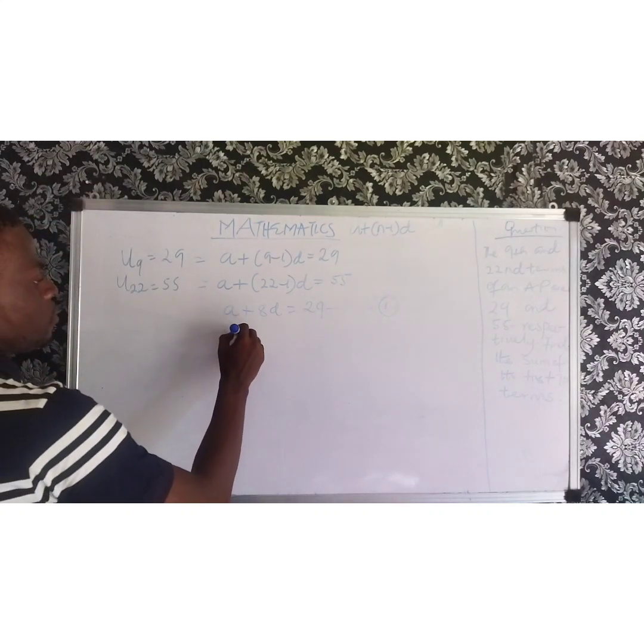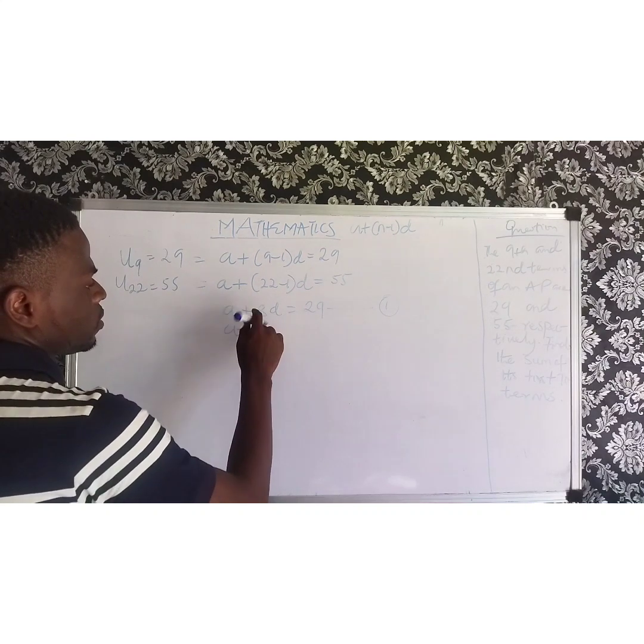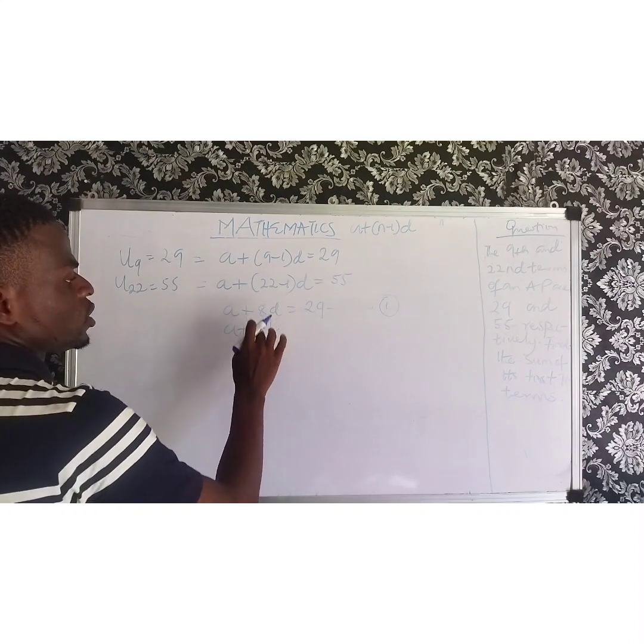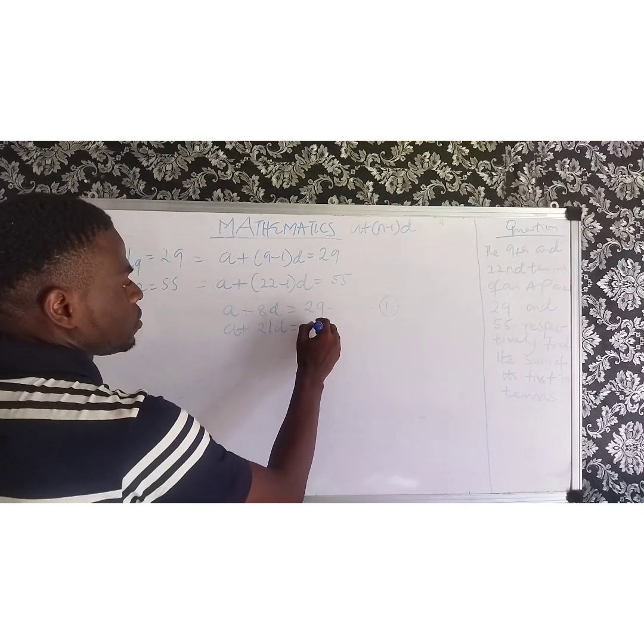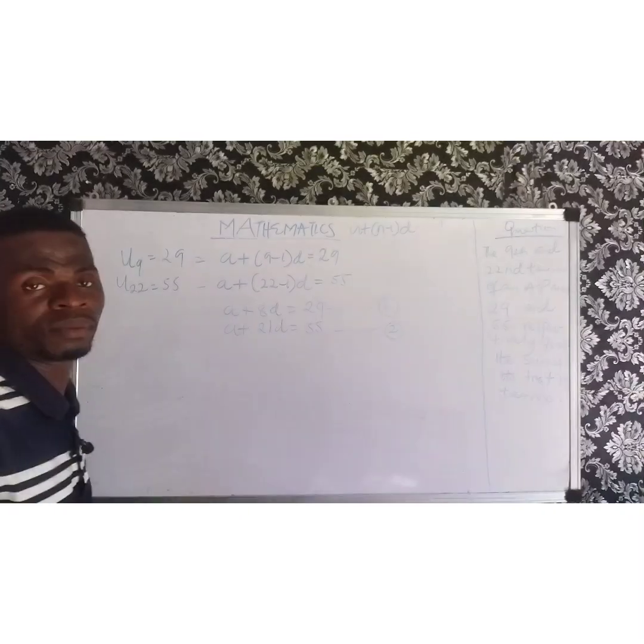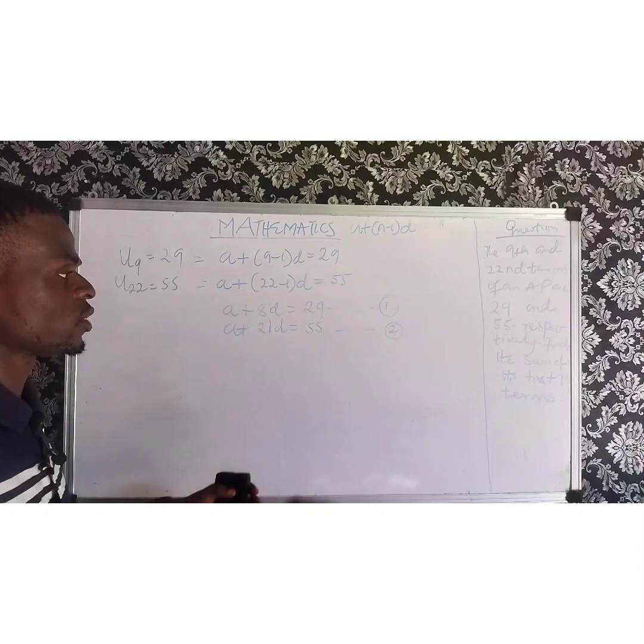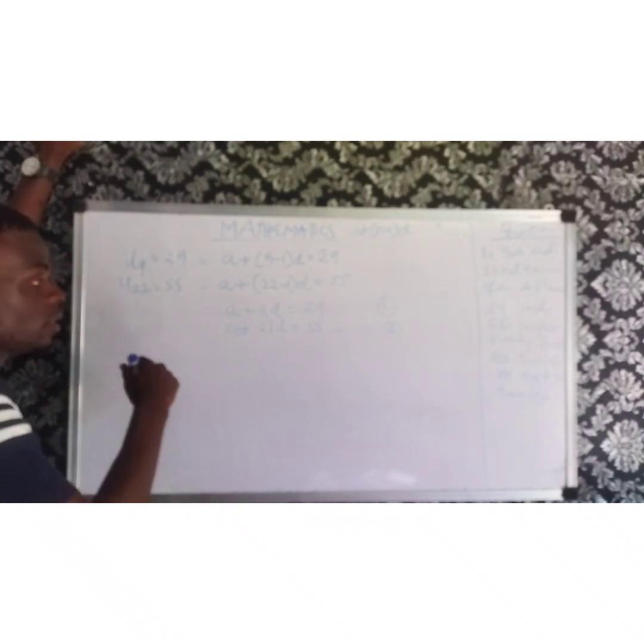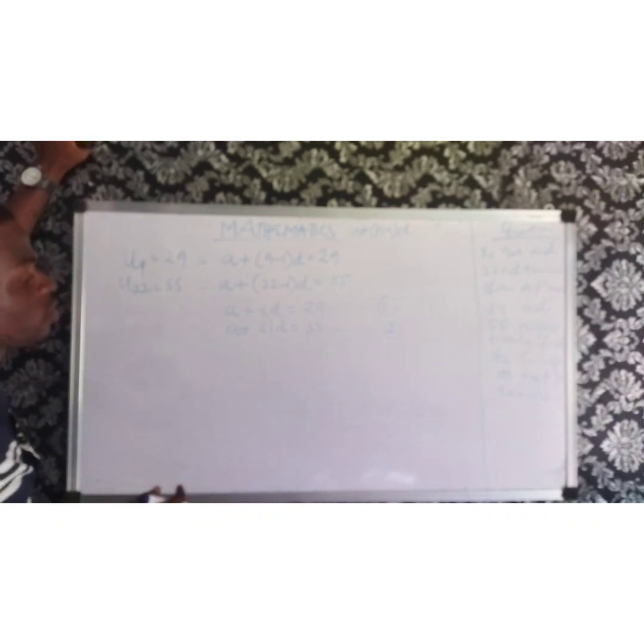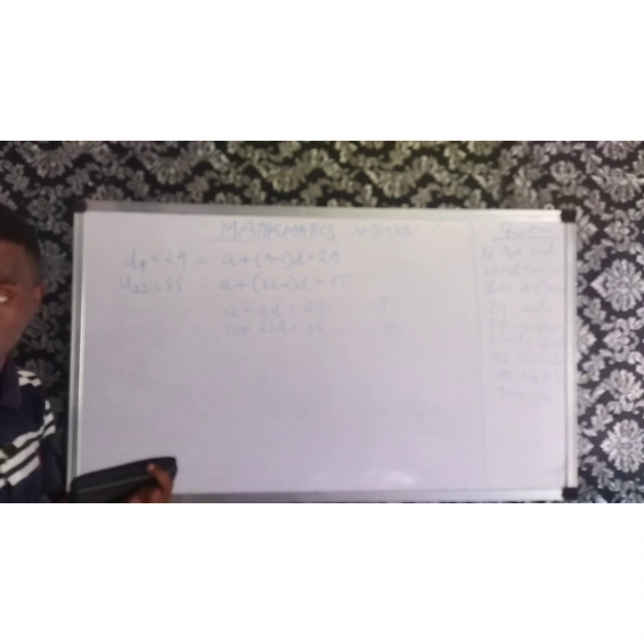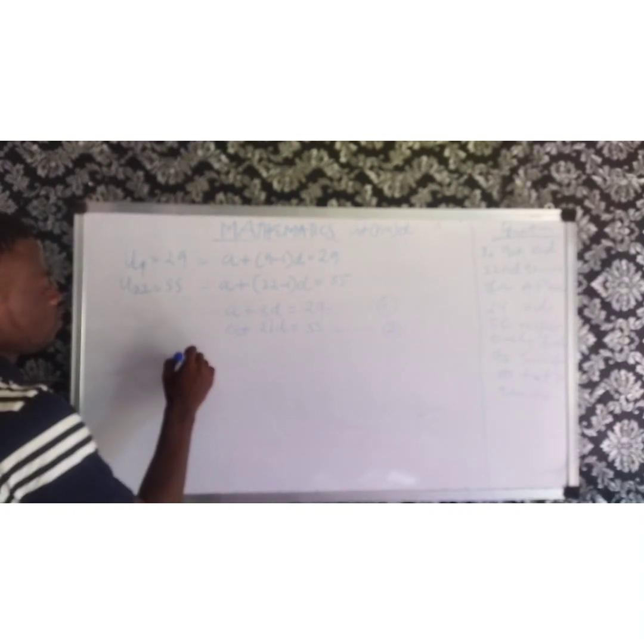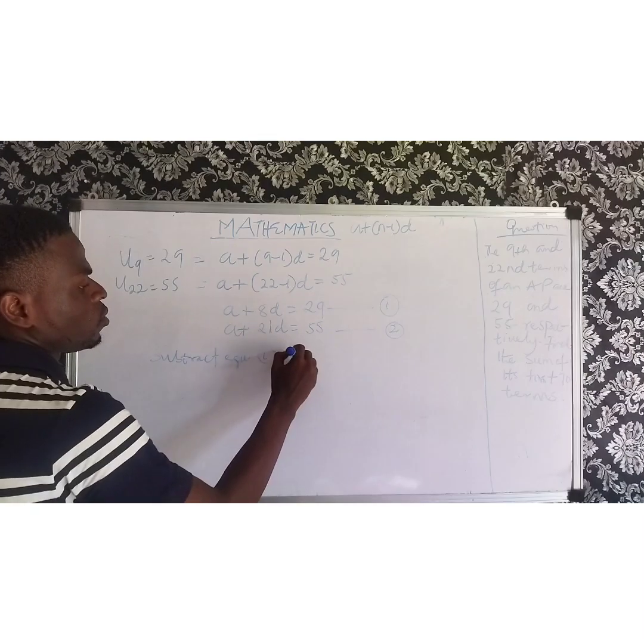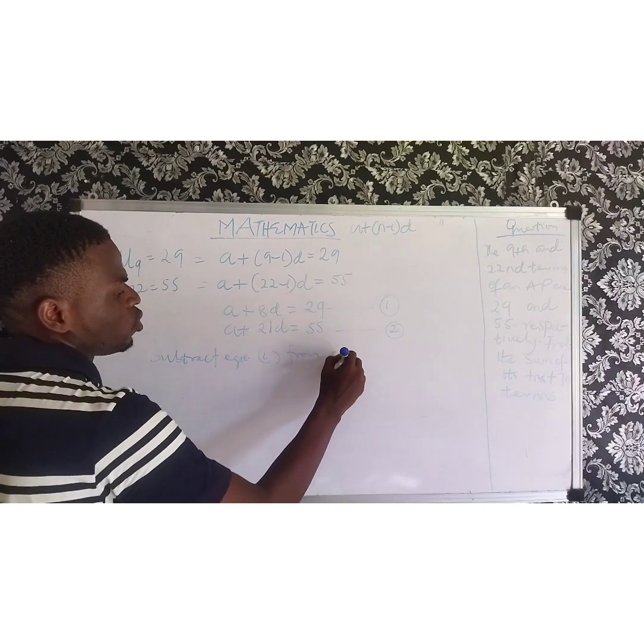The second one says that A plus 22 minus 1, which gives you 21 times D, equals 55. 22 minus 1 is 21 times D, equal to 55. We have equation 2. So it has formed an equation. We are going to eliminate A by subtracting equation 1 from 2.